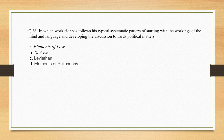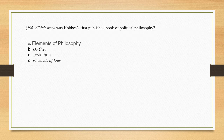In which work does Hobbes follow his typical systematic pattern of starting with the workings of the mind and language and developing the discussion towards political matters? The correct option is option A: Elements of Law. Which work was Hobbes' first published book of political philosophy? The correct option is option B: De Cive.